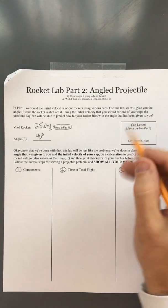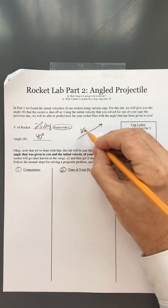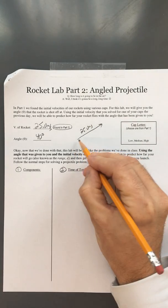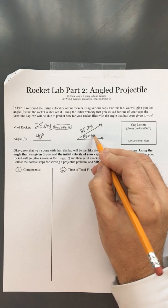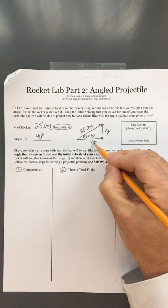First, to find our components, you have to understand that we know our total velocity is 25.0 meters per second and our theta is 40 degrees. Therefore, we can solve for our Vx and our Vy.